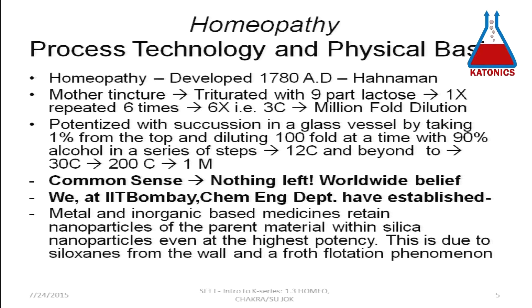So, let us start with homeopathy. Homeopathy is really a process technology and it has a physical basis. It was developed by 1780 AD by Dr. Hahnemann. It starts with a mother tincture, which is essentially an extract of the herb, and then it is triturated — one part of mother tincture with nine parts of lactose — to make what is called 1X. This process is repeated six times: one part of 1X triturated with nine parts of lactose is called 2X, and so on until you make 6X.